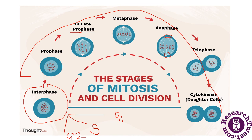In telophase, the separated daughter chromosomes arrive at the poles and the kinetochore microtubules disappear. The polar microtubules elongate further, the nuclear envelope reforms around each group of daughter chromosomes, and the condensed chromatin expands once more. The nucleoli, which disappeared at prophase, begin to reappear.